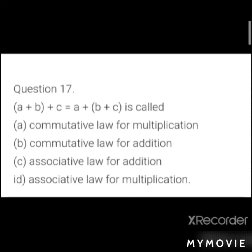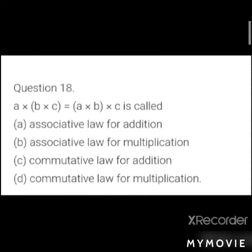MCQ 8: (a + b) + c = a + (b + c) is called? Options: a) commutative law for multiplication, b) commutative law for addition, c) associative law for addition, d) associative law for multiplication. It is association with addition, so answer: c) associative law for addition.